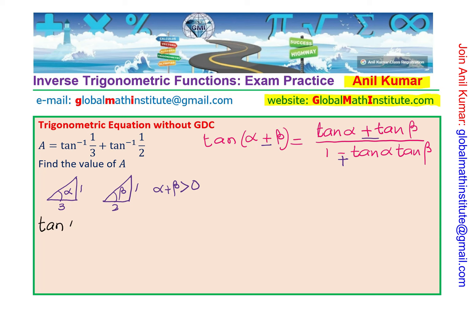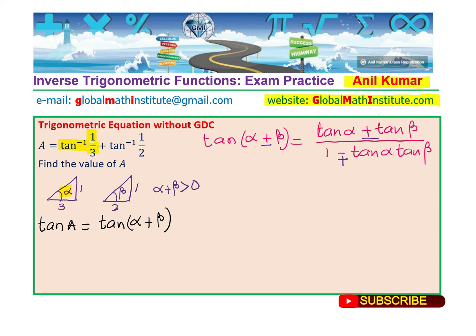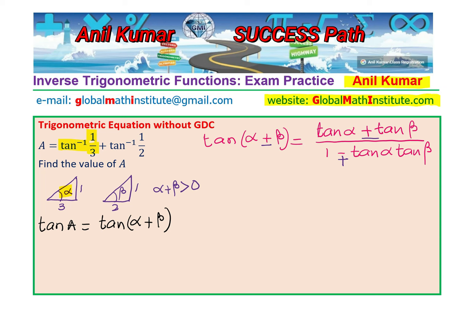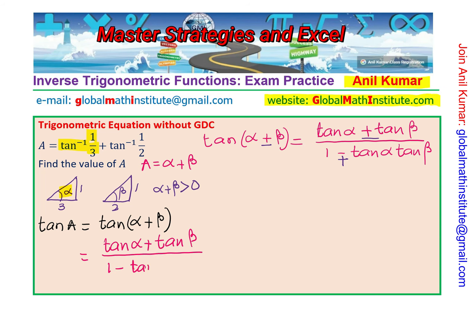If I say tan of A, it will be tan of α plus β. Because tan inverse (1/3) gives tan α, and tan inverse (1/2) gives tan β. So when we take tan on both sides, A equals α plus β. We can now write the formula: tan A equals tan α plus tan β over 1 minus tan α·tan β. We substitute the values to find tan A.